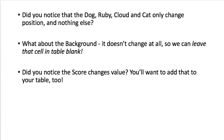Did you notice that the dog, Ruby, cloud, and cat only changed position? They didn't change anything else. What about the background? It doesn't change at all, so you can leave that cell blank. And the score - how did it change? It didn't move, but its content changed.